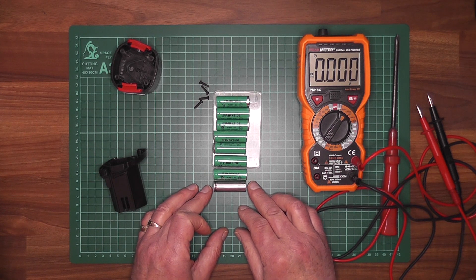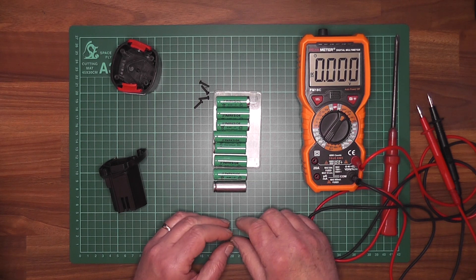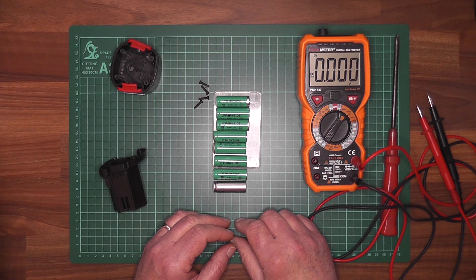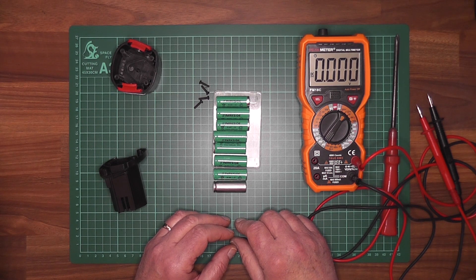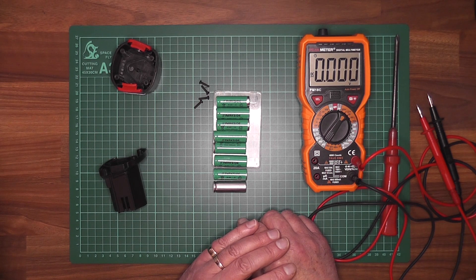When you're charging them, it will charge up to about, each of these will charge to about 1.5, which will bring it up to 12 volts. The little motor in the rotary tool can handle more than that. It'll just spin so much quicker.